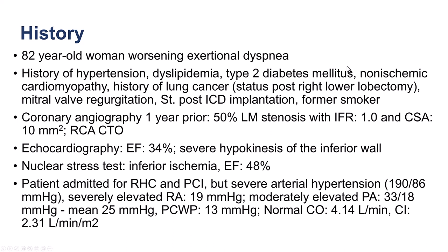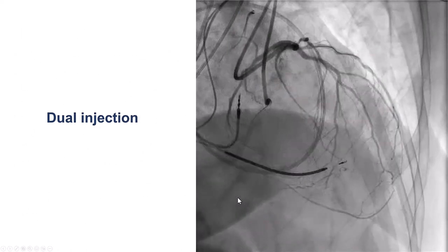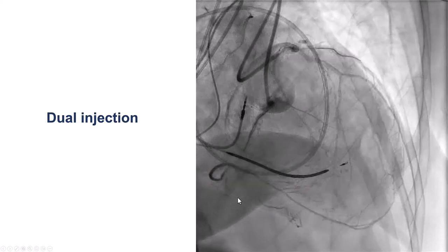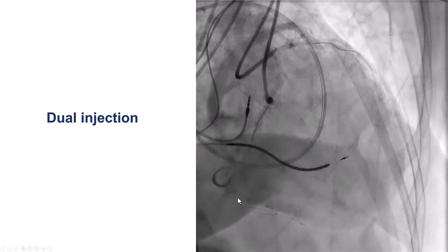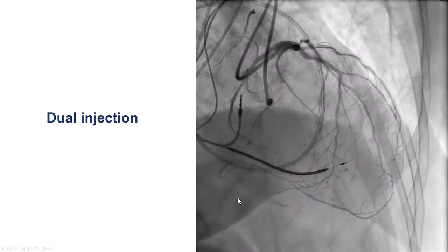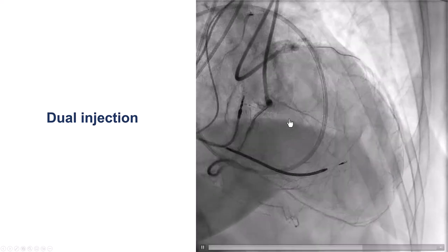However, when she came to the cath lab for PCI, her systemic pressure was 190 over 86 with an aortic root diameter of 19 millimeters mercury. So the patient was taken off the table, and the plan was to treat the hypertension first and then have the patient come back. The following day, after the blood pressure was controlled, the patient returned for PCI of the right coronary artery CTO.